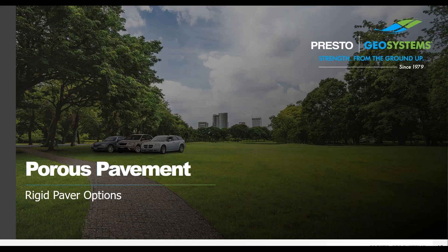Here at Presto Geosystems, we offer two different types of porous pavement systems: a flexible and a rigid option — both able to fit your needs depending on which is more appropriate. Instead of adaptations of existing pavements, our solutions are designed from the ground up to function as porous pavements.